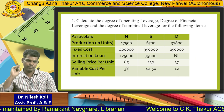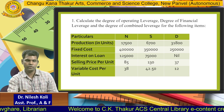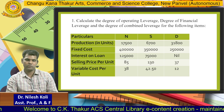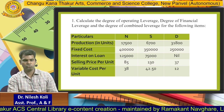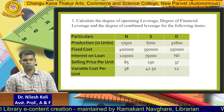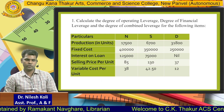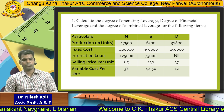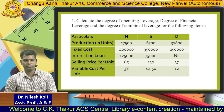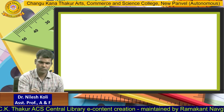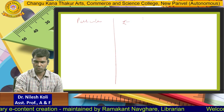Here one more problem is there: calculating the degree of operating leverage, financial leverage, and combined leverage for the following items. The information is given for three firms — Firm N, Firm S, and Firm D. Information given includes production units, fixed cost, interest on loan, selling price per unit, and variable cost per unit. We will solve for Firm N only, preparing its income statement.